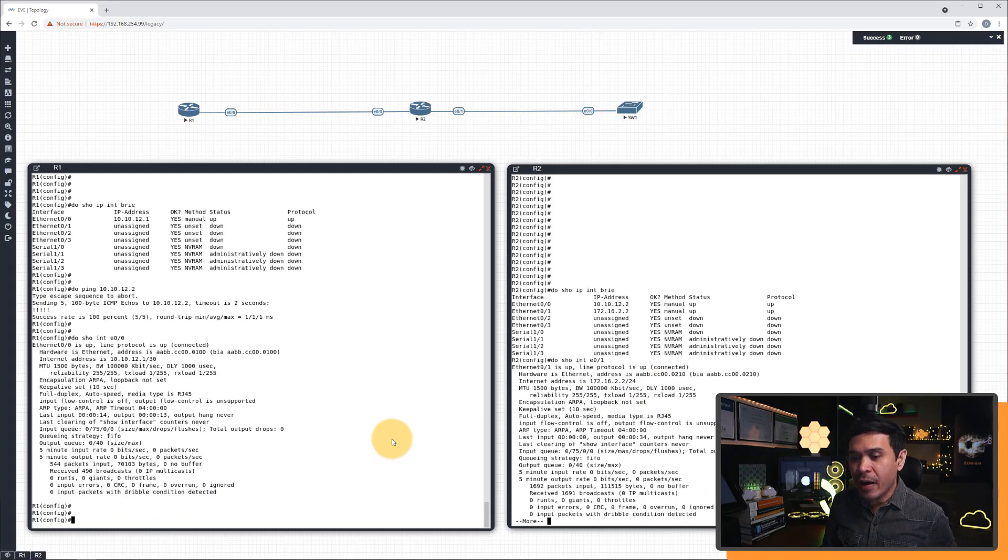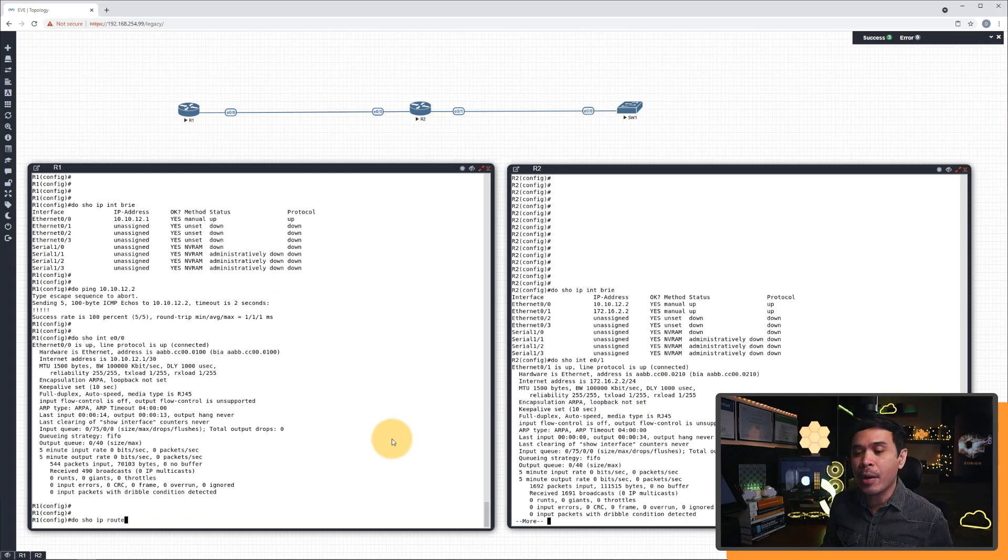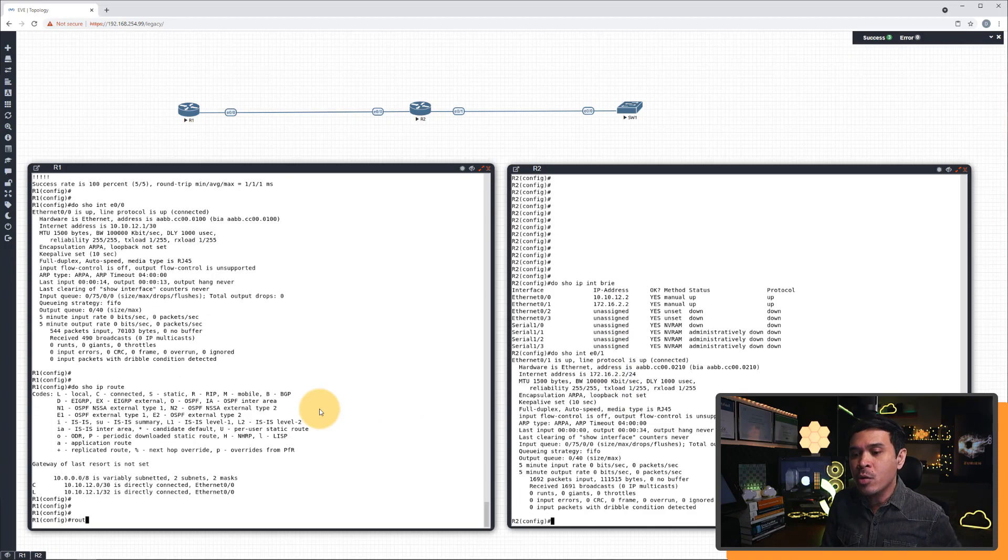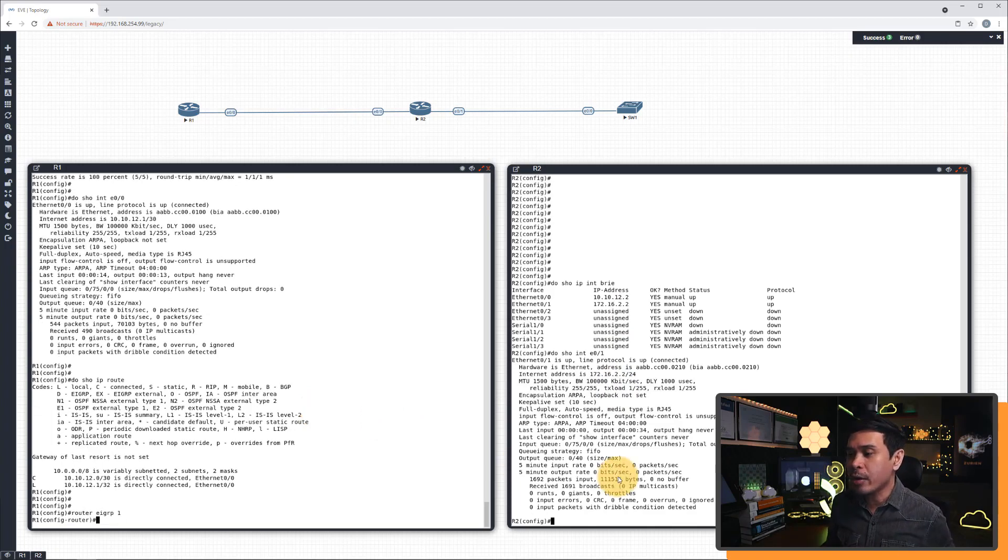Let's verify the routing table of R1. I will do show IP route. As you can see, there is no network learned yet. Not the 172.16.2.0 network behind R2. Why? Because we haven't enabled dynamic routing protocol EIGRP. And this is what we're about to do. We're going to enable EIGRP using router EIGRP command on both router 1, R1, and R2.